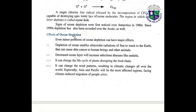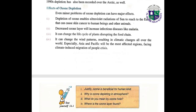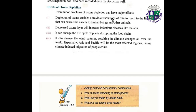What is the ozone hole? The region in which the ozone layer depletes is called the ozone hole. Signs of ozone depletion were first noticed over Antarctica in 1980. What are the effects? Depletion of ozone enables ultraviolet radiations from the sun to reach the earth, which can cause skin cancer in human beings. Increased ozone depletion will increase infectious diseases like malaria. It can change the life cycle of plants, disrupting the food chain. It can change wind patterns, resulting in climatic change all over the world.